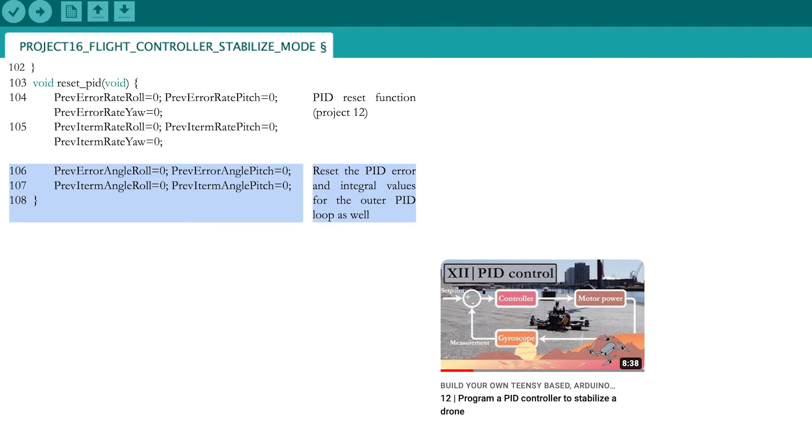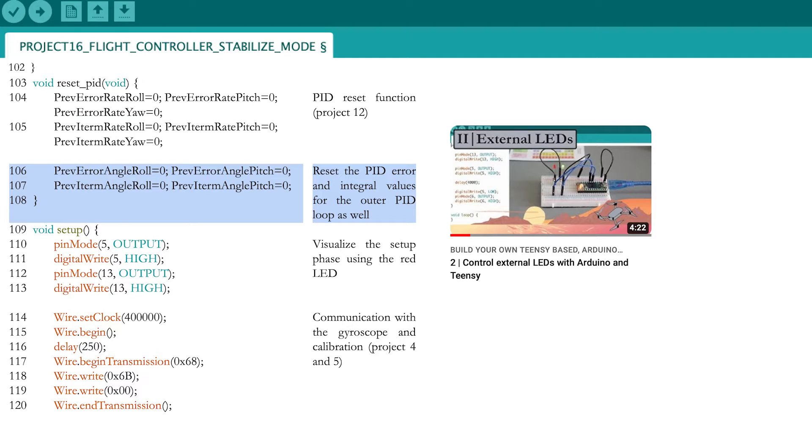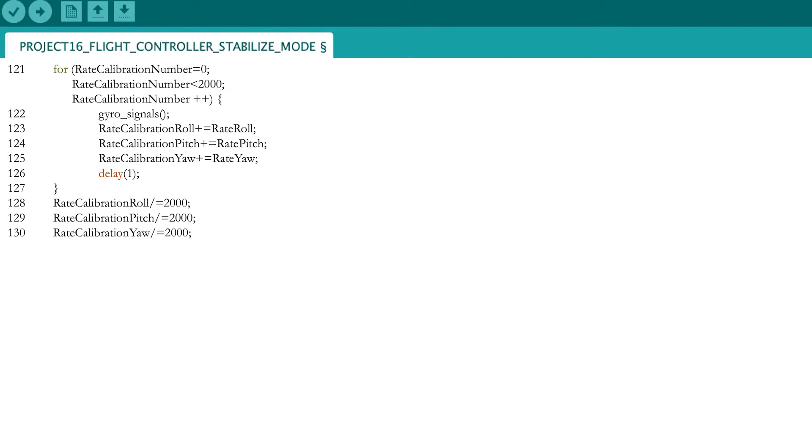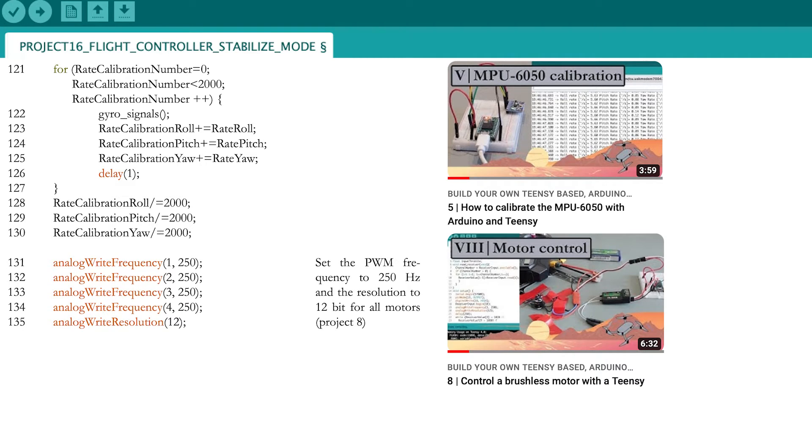Do not forget to reset the PID error and integral values for the outer loop as well. Now light up the LEDs as seen in part 2 and start the communication with the MPU6050. Calibrate the gyroscope with the lines copied from part 5 and set up the communication with the motors.